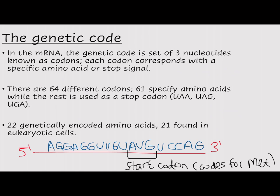So what is the genetic code? In the messenger RNA, the genetic code is a set of three nucleotides known as codons. Each codon corresponds with a specific amino acid or stop signal. There are 64 different codons: 61 specify amino acids, while the remaining three are used as stop codons — UAA, UAG, and UGA.